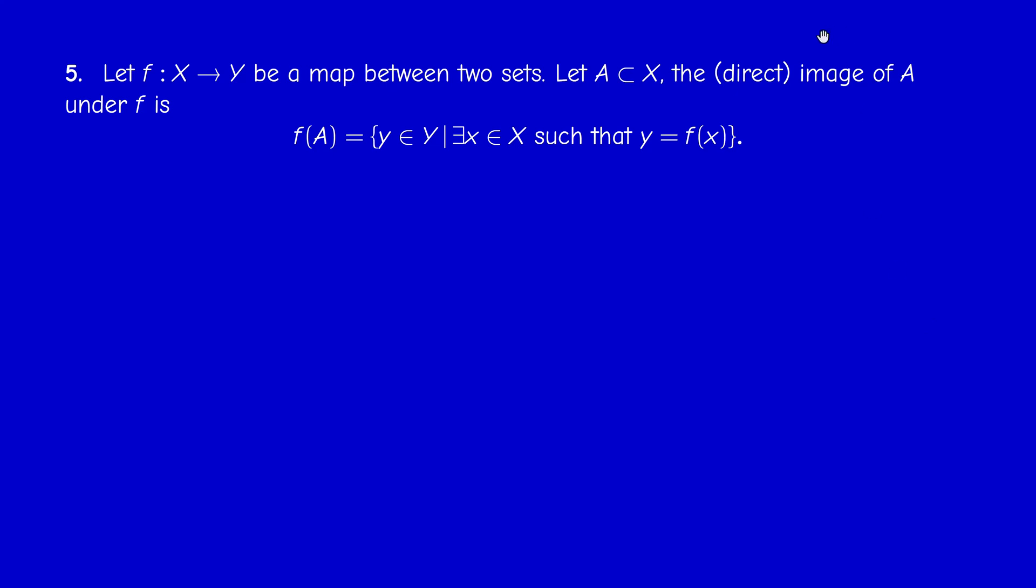The direct image under a map of a subset A of X is, by definition, the set of F of X where X is in A. It's the direct image.